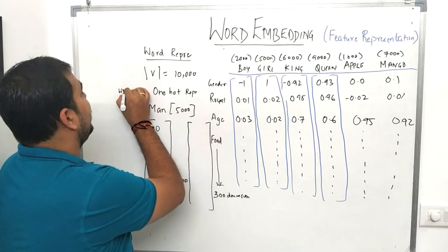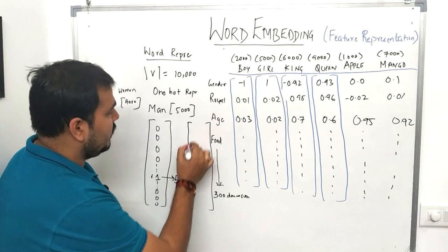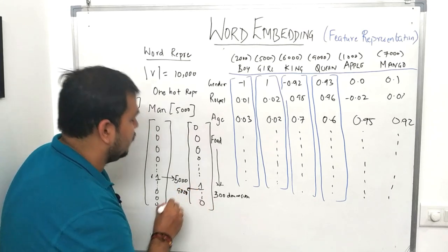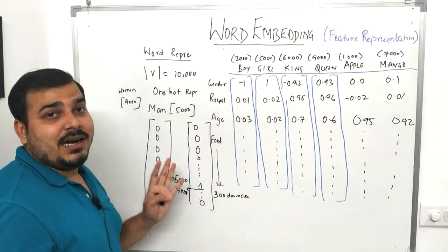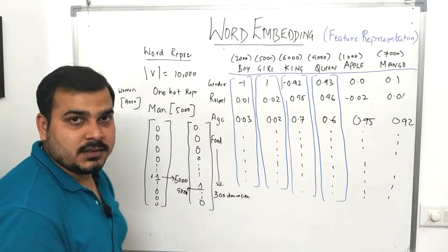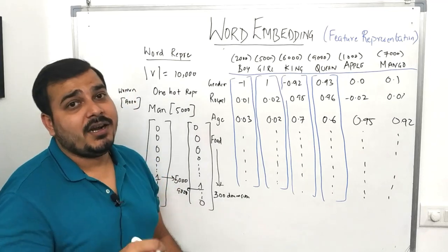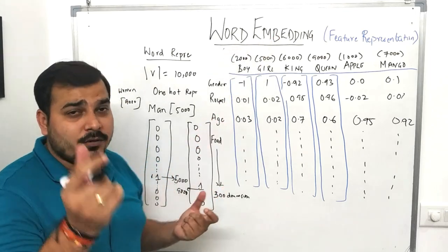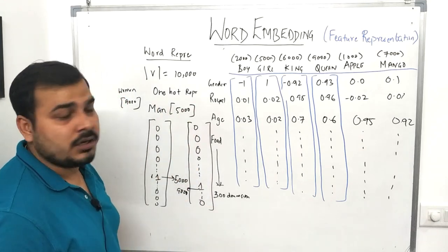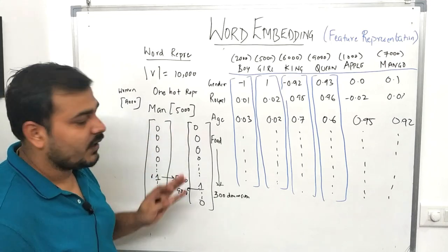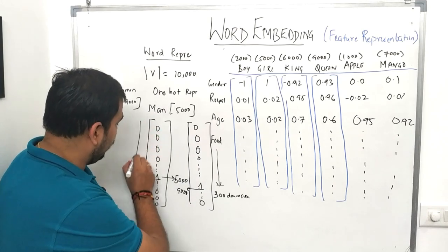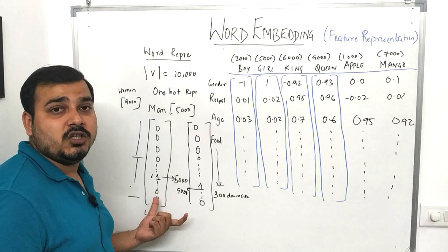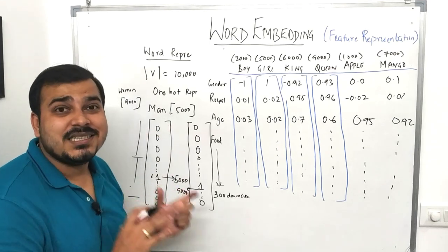Similarly, suppose I have one more word like 'woman', which is present at the 9,000th index. Its vector representation will have a one at the 9,000th location and zeros everywhere else. With one-hot representation we can convert words into these kinds of vectors. The size of these vectors is 10,000 dimensions — one for each word in the dictionary — and this results in a very sparse matrix.